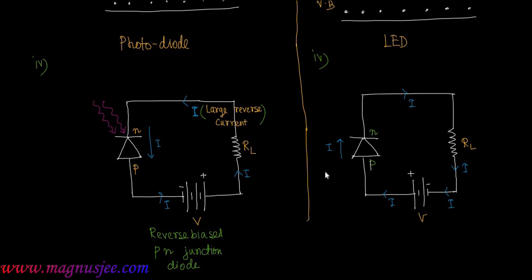When conduction electrons travel from the conduction band to the valence band and recombine with the holes in the valence band, light is emitted from the junction — not from the N-region, but from the junction. The light incident on the photodiode causes the reverse current to become large, while for the LED, light is emitted from the junction.